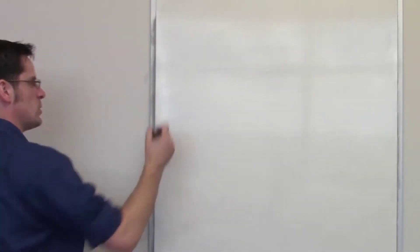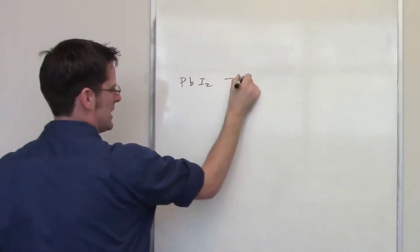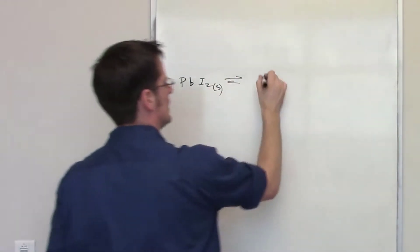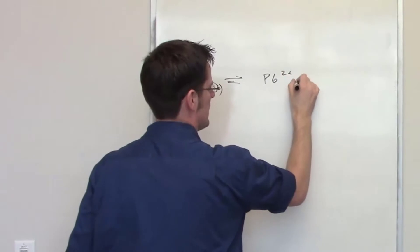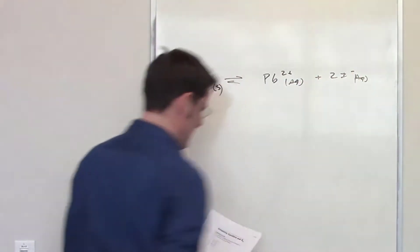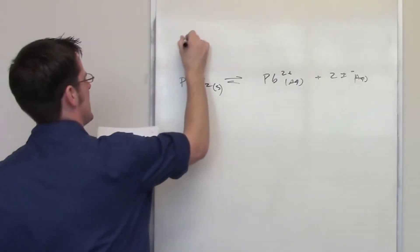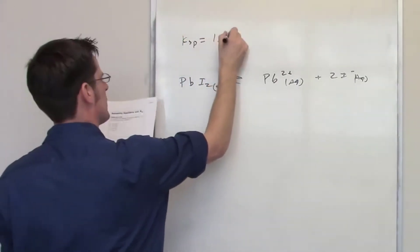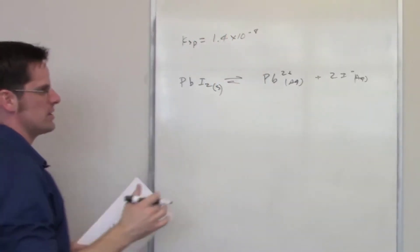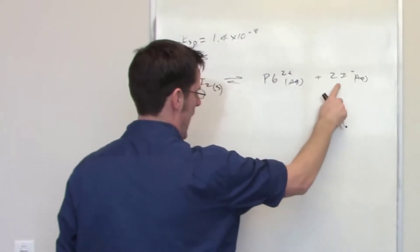This problem is about lead(II) iodide. Lead(II) iodide dissociates at equilibrium into lead cation Pb²⁺ and 2 molar equivalents of iodide I⁻. The solubility product Ksp is equal to 1.4 times 10 to the negative 8th. The question asks: what is the concentration of iodide at equilibrium?